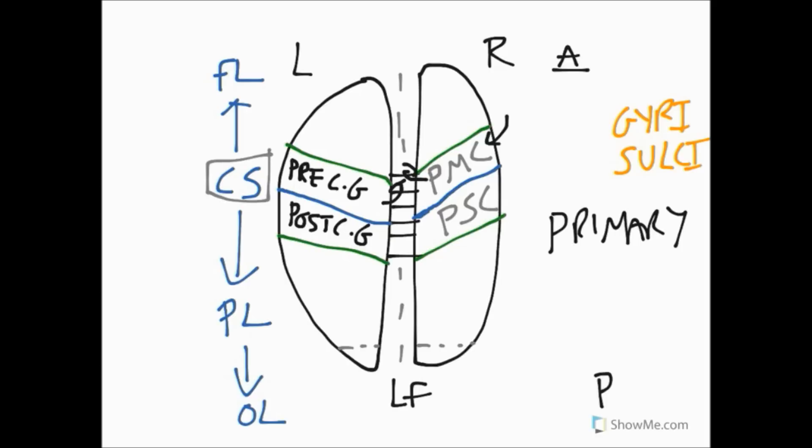The primary motor cortex is where all voluntary motor control comes from, and the primary sensory cortex is where all general sensory information is processed. But these primary areas can't do their job on their own—they need support from what we call association areas.